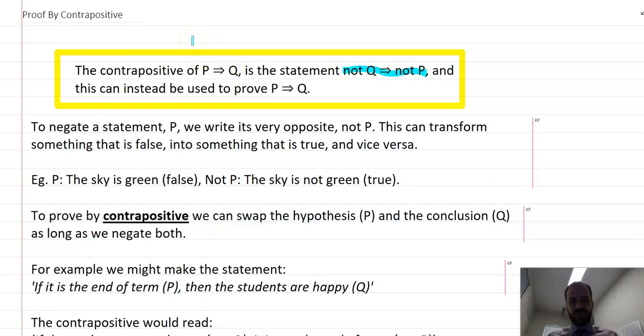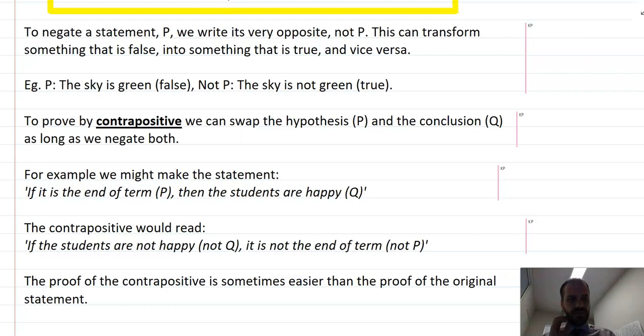For instance, if it is the end of term, that's P, then the students are happy, so that can be written as P implies Q. If the students are not happy, so that's the opposite of Q, not Q, then not Q implies it is not the end of term, not P.